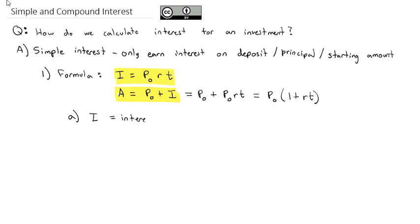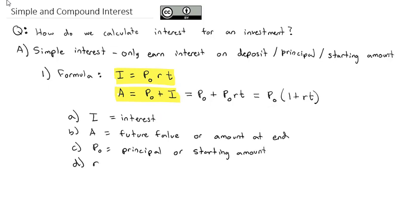I is the interest that is earned on the account. A is what we'll often call the future value of the account or the amount at the end. The P sub zero is often called the principal or the starting amount. R, we've seen R before, that is our interest rate. And of course, we never use percentages. It's always going to be expressed as a decimal. And finally, T is the time and it will always be in years. And that's important that the time is always in years.